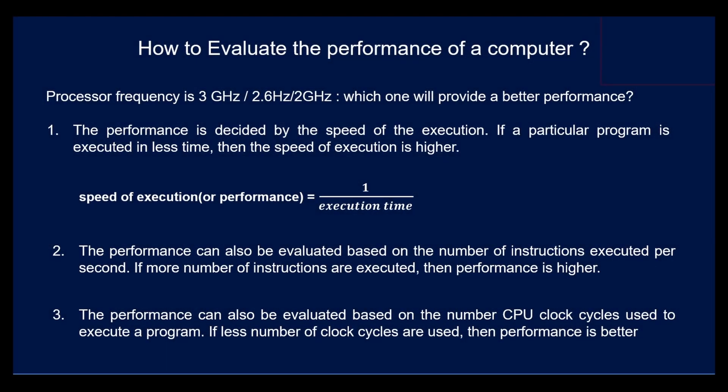Hello friends. In this video let us see how to evaluate the performance of a computer based on CPU's frequency. You might have heard or observed in your laptop the processor frequency as 3 GHz or 2.6 GHz or 2 GHz. What is the significance of this? Which one will provide a better performance?